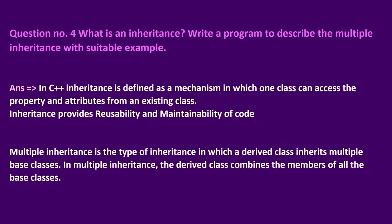Question number 4: What is inheritance? Write a program to describe multiple inheritance with a suitable example. In C++, inheritance is defined as a mechanism in which one class can access the properties and attributes from an existing class. Inheritance provides reusability and maintainability of code. Multiple inheritance is the type of inheritance in which a derived class inherits from multiple base classes. In multiple inheritance, the derived class combines the members of all base classes.